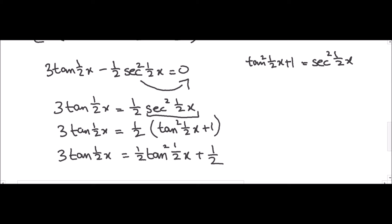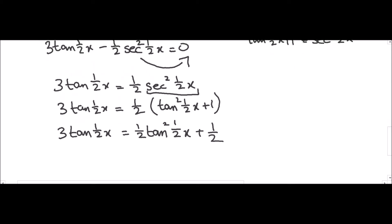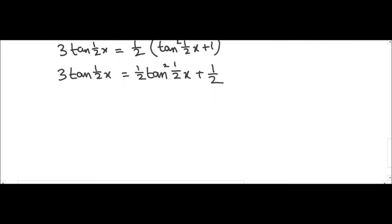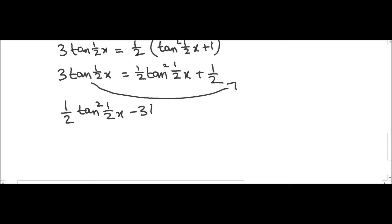Bringing everything to one side gives a quadratic equation: ½·tan²(½x) minus 3·tan(½x) plus ½ equals zero.